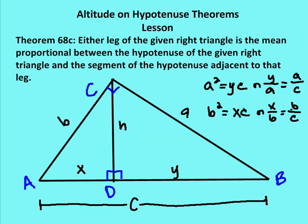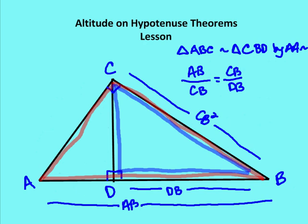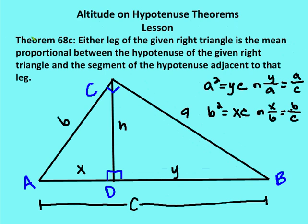Theorem 68C states: either leg of the given right triangle is the mean proportional between the hypotenuse and the segment of the hypotenuse adjacent to that leg. We've already proven this: AC squared equals AD times AB, and CB squared equals DB times AB. In the summary notation, B squared equals X times C, and A squared equals Y times C — just restating those equations as a formal theorem.